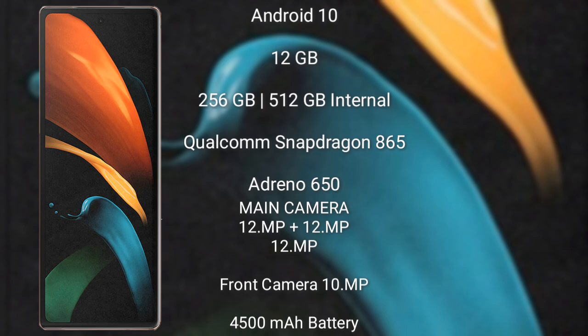The Samsung Galaxy Z Fold 2 comes with 12GB of RAM and 256GB or 512GB of internal storage. It features the Qualcomm Snapdragon 865 processor with an Adreno 650 GPU. The Samsung Galaxy Z Fold 2 has a rear triple-camera setup with 12MP plus 12MP, and a front camera of 10MP.